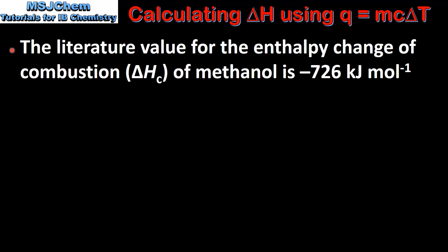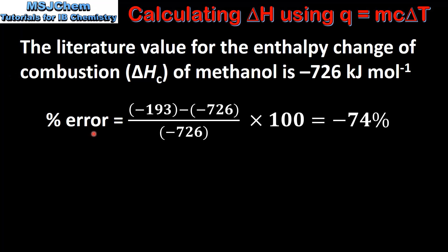The literature value for the enthalpy change of combustion of methanol is negative 726 kilojoules per mole. Here we have the equation for calculating the percentage error: our experimental value minus the literature value, divided by the literature value, multiplied by 100, which gives us a percentage error of negative 74%.